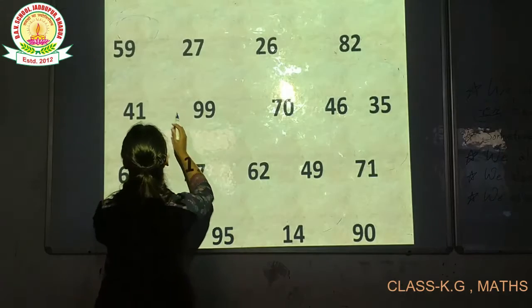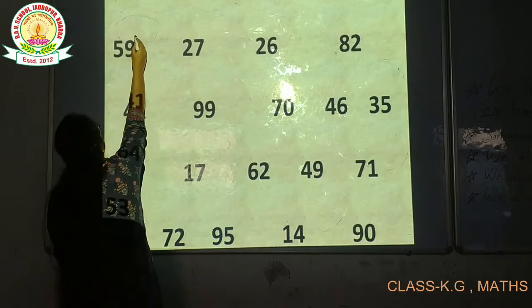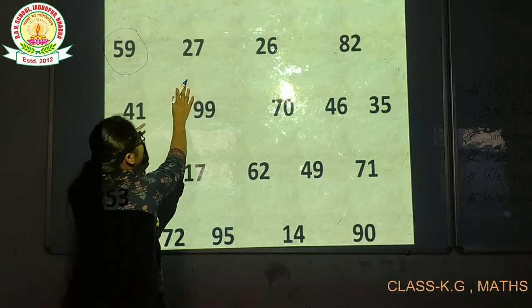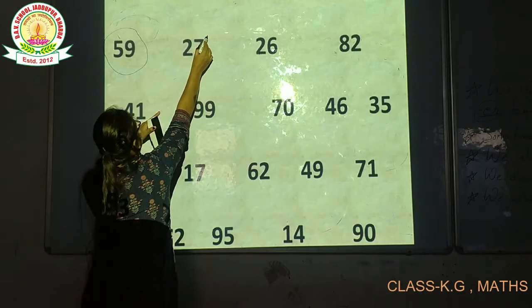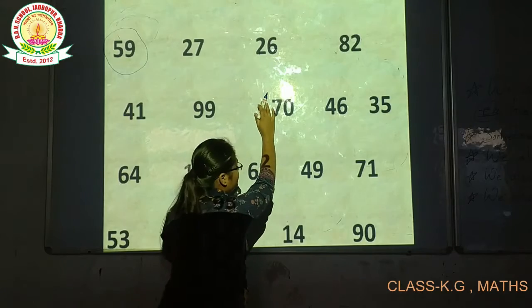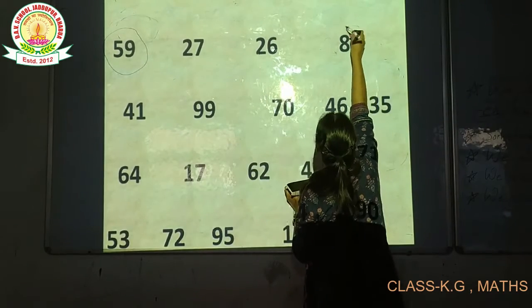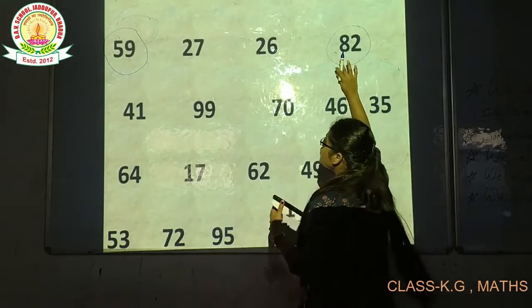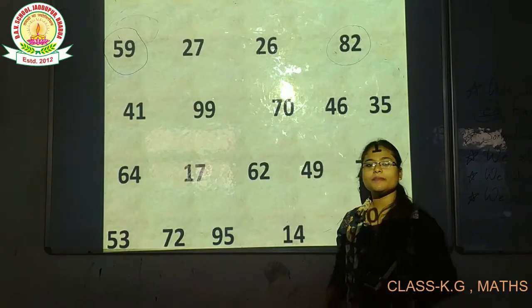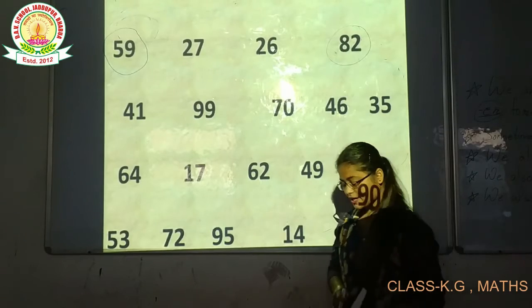59? Yes. 59 is between them. 27? No. 23? No. Last one is 82. These two numbers we have totaled. These two numbers are between 50 and 100.